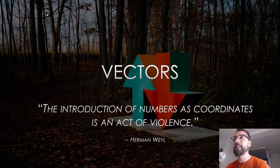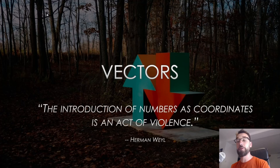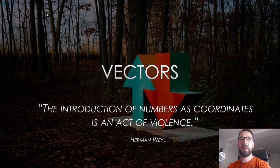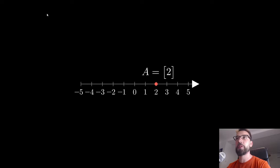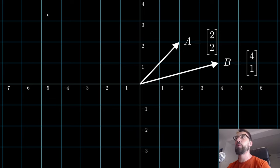I'd like to share one amazing quote: 'The introduction of numbers as coordinates is an act of violence,' because deep down math is just beautiful, and vectors are just beautiful. Vectors are pretty much just an ordered list of numbers, and you can say vectors have dimensions. A one-dimensional vector would be something like vector A with just one dimension — value two — and if you plot it graphically it would be a straight line. If we want a two-dimensional vector, we need two axes: vector A with coordinates (2, 2) and another vector with coordinates (4, 1).